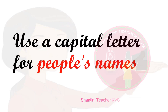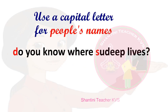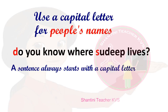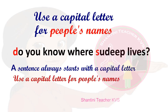Remember, to use a capital letter for people's names. That is, the first letter of a person's name must be a capital letter. 'Do you know where Sudip lives?' What is the mistake in this sentence? Do you remember? A sentence always starts with a capital letter, and you must also use a capital letter for people's names. But this sentence starts with a small letter, as well as using a small letter for Sudip's name — that is, Sudip's name has a small s.